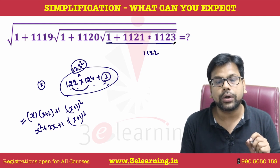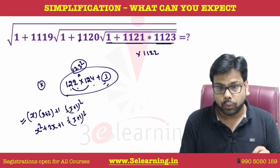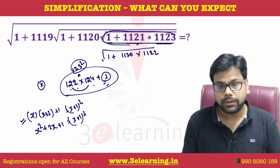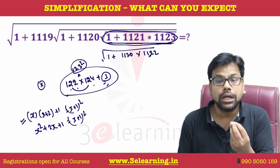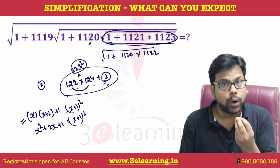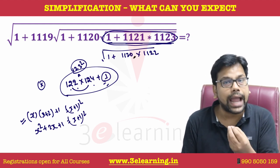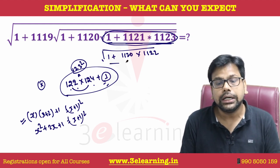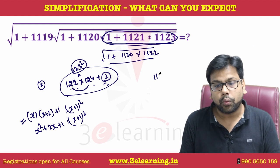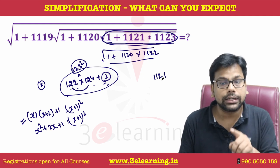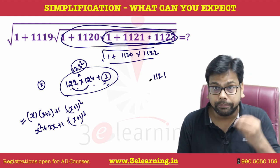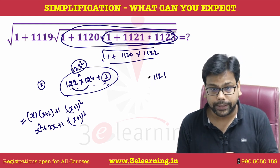So the value under the root is 1122 × (1120 + 1) under root. The final outcome: 1122 × 1121 under root. Again, gap of 2, plus 1 should be the square of 1121. So the under root of that is 1121.